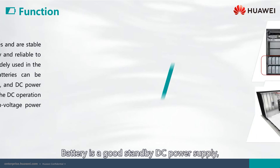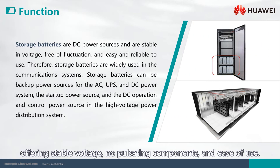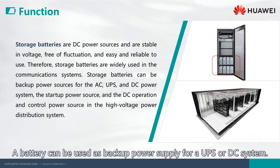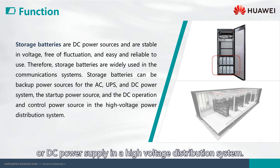A battery is a good standby DC power supply, offering stable voltage, no pulsating components, and ease of use. A battery can be used as backup power supply for a UPS or DC system. It can also be used as a starting power source or DC power supply in a high-voltage distribution system.